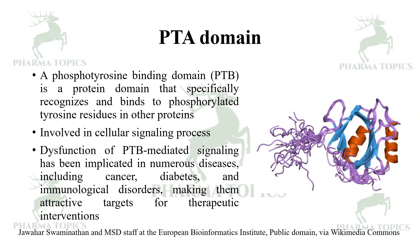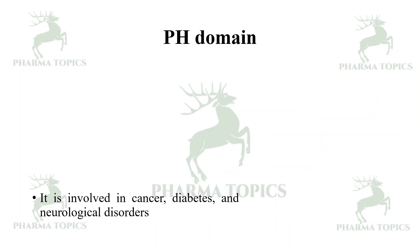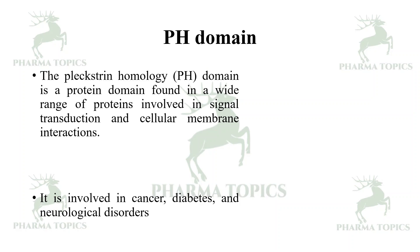Dysfunction of PTB-mediated signaling has been implicated in numerous diseases such as cancer, diabetes, and immunological disorders, making them attractive targets for therapeutic interventions. The next is the PH domain, called the pleckstrin homology domain. It is a protein domain found in a wide range of proteins involved in signal transduction and cellular membrane interactions.